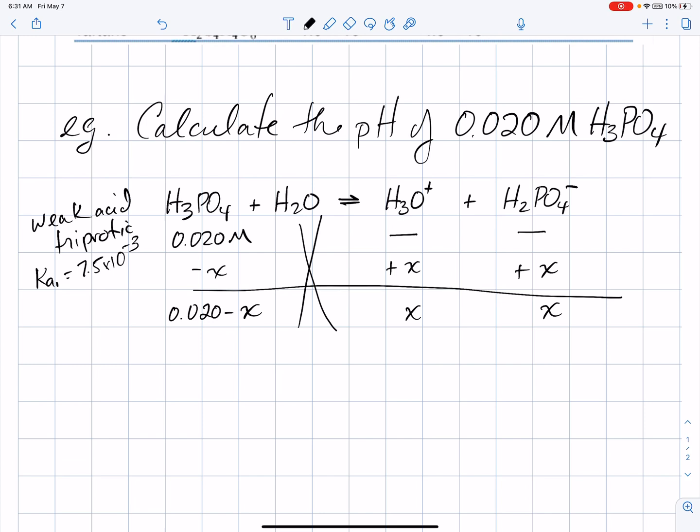The Ka value for step one will equal the hydronium concentration times the dihydrogen phosphate concentration over the phosphoric acid concentration. That's 7.5 times 10 to the minus 3. And, if we put our algebra in, that'll equal X squared over 0.020 minus X.